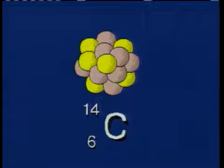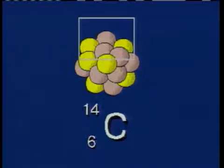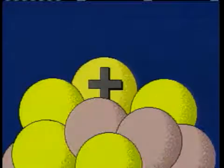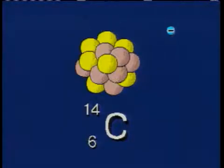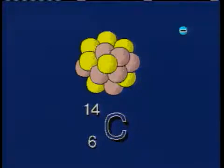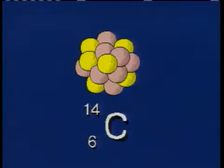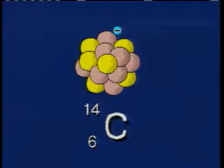During radioactive decay, one of the neutrons in the nucleus changes into a proton and an electron. This electron, or beta particle, is emitted from the nucleus. The nucleus that remains has one less neutron and one more proton, which transforms the atom from carbon to nitrogen. Let's watch it happen again. A neutron changes into a proton and an electron, and the electron is ejected from the nucleus.